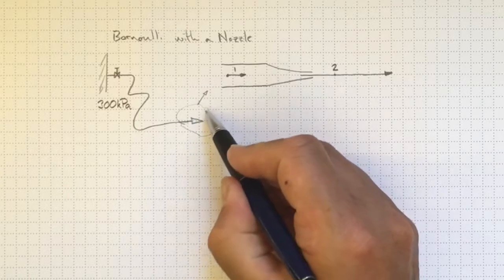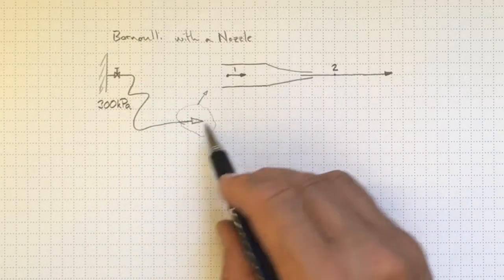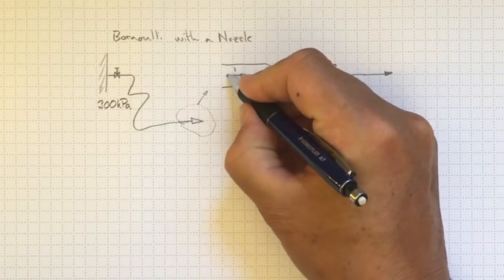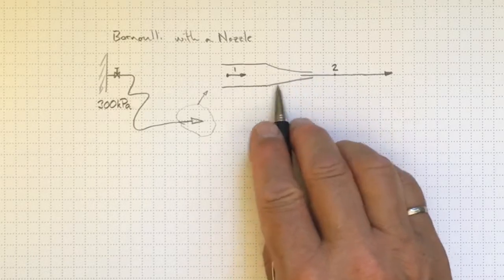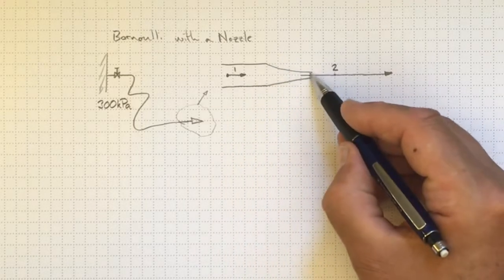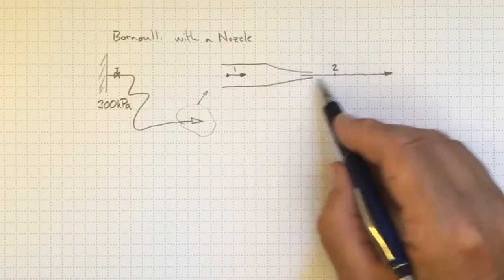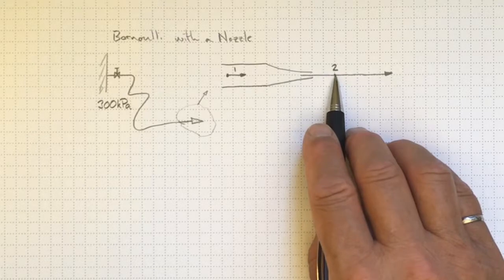If we zoom in on this region here and ignore the losses in the hose for a while, we'll see that we'll have a fairly small velocity inside the hose. But where this nozzle narrows down in order to conserve mass going through this smaller area here, it has to speed up a lot. So the velocity will be much higher at location 2.